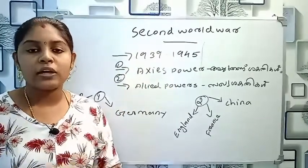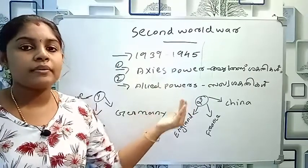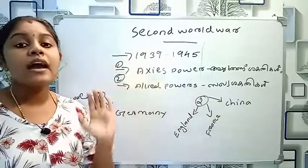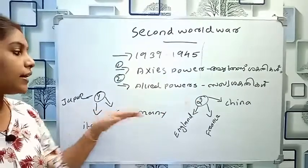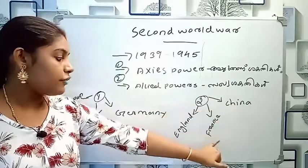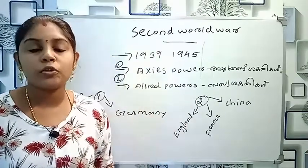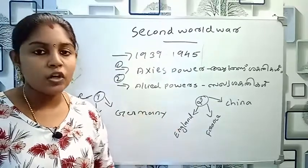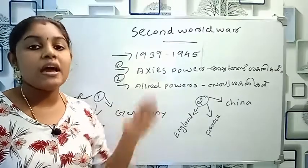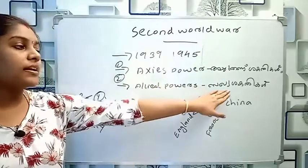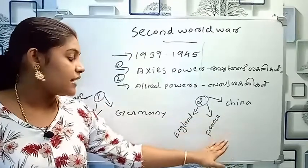We have to understand where the Axis Powers are and what they represent. The Allied Powers are China, France, and England. The Axis Powers are Germany, Italy, Japan. Allied Powers are China, France, and England.